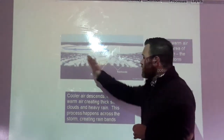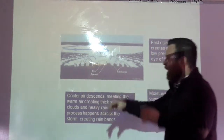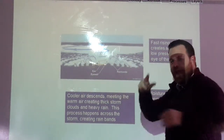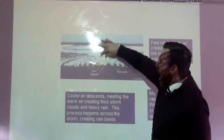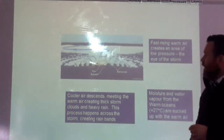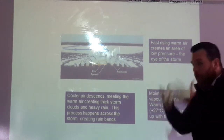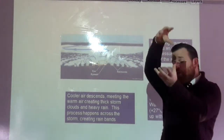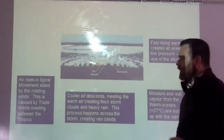This process happens across the storm — as you can hopefully see on the diagram — and that's why we get bands of clouds. The storm operates with the eye of the storm in the middle. Fast-rising warm moist air, bringing moisture with it, meets the cooling descending cool air and gives us our storm clouds.